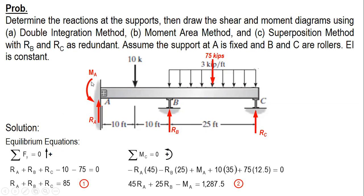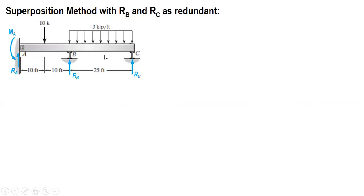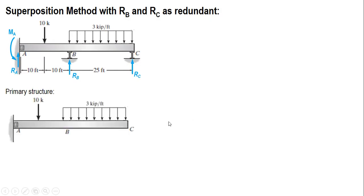We have four reactions and only two equilibrium equations, so we need two additional equations. These will come from the superposition method. Our beam has RB and RC chosen as redundant, so the primary structure is obtained by removing the supports at B and C, leaving a cantilever beam.